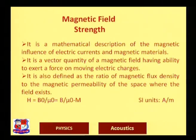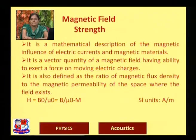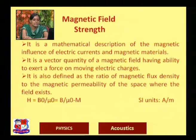Magnetic field strength H is a mathematical description of the magnetic influence of electric currents and magnetic materials. It is a vector quantity — a magnetic field with the ability to exert a force on electric charges. H = B₀/μ₀, or H = B₀/μ₀ − M. The unit is ampere per meter. It is also defined as the ratio of magnetic flux density to magnetic permeability.